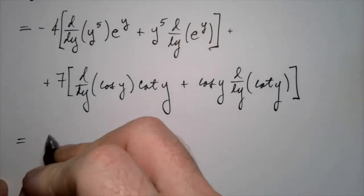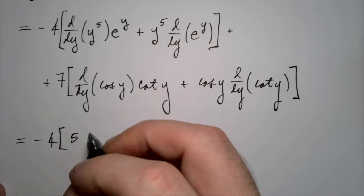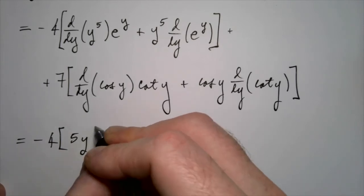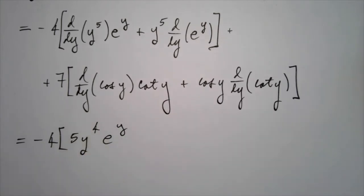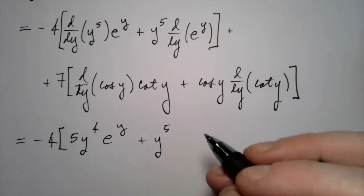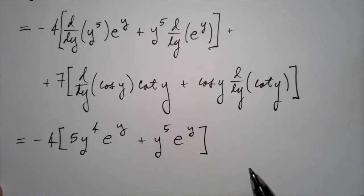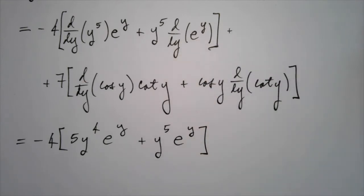Continuing on, we need to take those derivatives and evaluate. So the derivative of y to the fifth, that's not five to the y. It's not an exponential function. It's just our old friend the power rule. It's just five y to the fourth. For the second term, y to the fifth is being multiplied by the derivative of e to the y. That's just e to the y. It doesn't matter if we call it e to the x or e to the y or e to the t. Whatever that variable is called, if that's what you're taking the derivative with respect to, it is just itself.